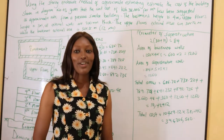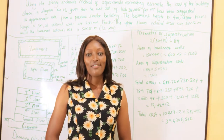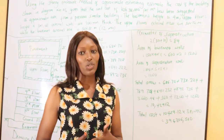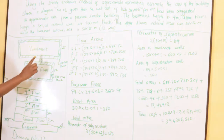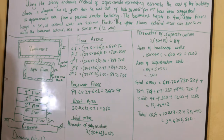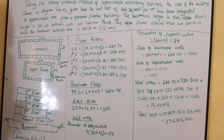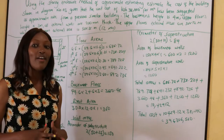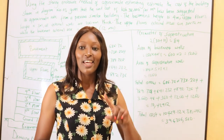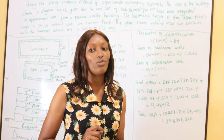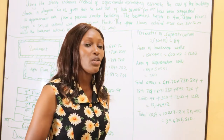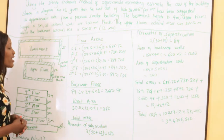The first step whenever you're given such a question is to sketch, so that you can make your calculations as easy as possible. For the basement we are told it is 50 meters by 25 meters, and for the upper floors the external dimensions are 30 by 12 meters. The walls are 200 millimeters thick. We already covered story enclosure methods and other approximate estimation methods in a previous video — kindly check that video via the link in the description.